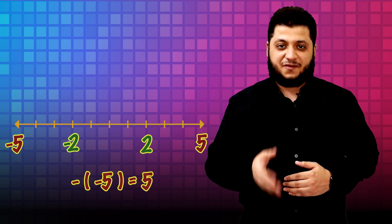For example, the opposite of number 2 is negative 2 and the opposite of number negative 5 is 5. The opposite of number zero is zero itself. So notice that the opposite of zero is zero itself.